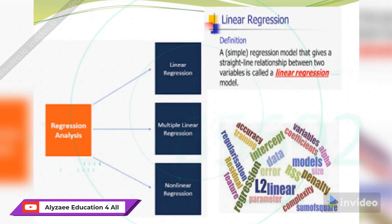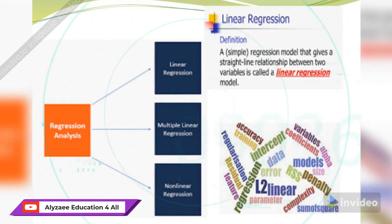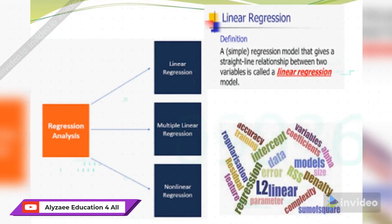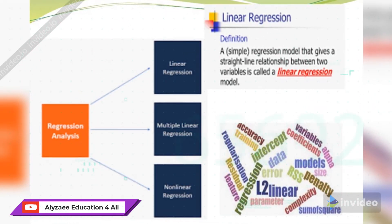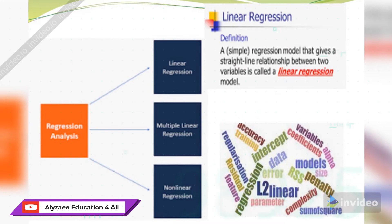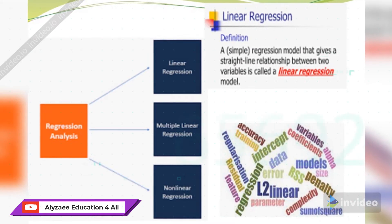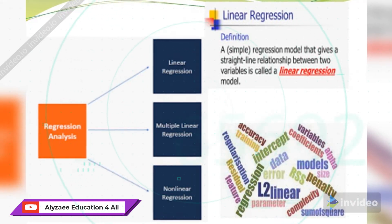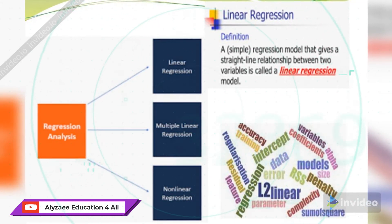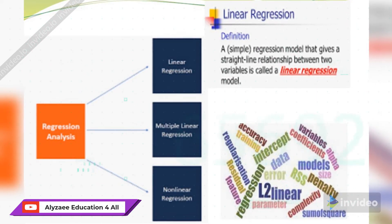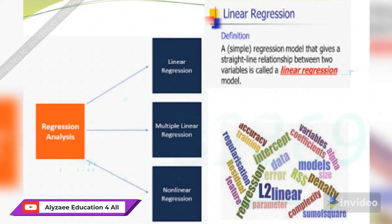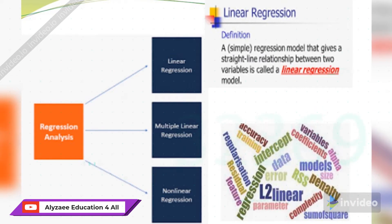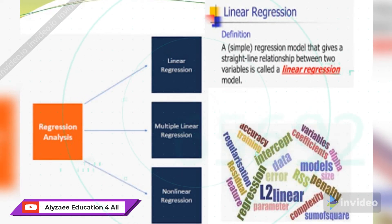In the linear regression model we can see different words such as penalties, complexities, models, coefficients, variables, intercepts, regularizations, and residual. These are different words used in linear regression. The basic concept of linear regression is that it is a simple straight line relationship between two variables.